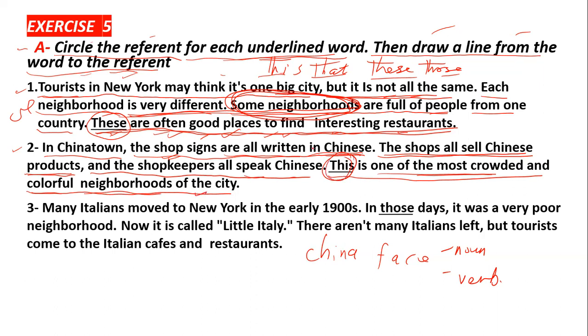This — what's meant by This? هذا — what is the referent? ما هو مرجعها? Chinatown. The referent is Chinatown.